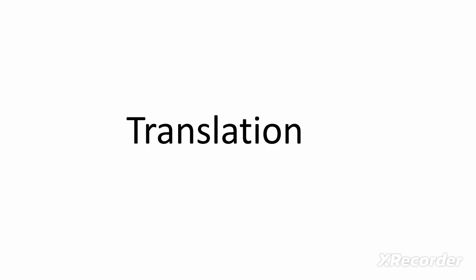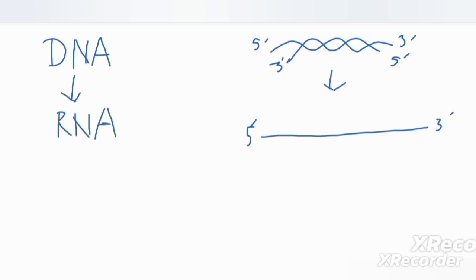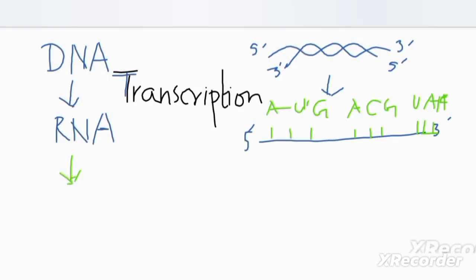Gene expression includes two steps: transcription and translation. Transcription is the first step of gene expression in which RNA is synthesized from DNA using RNA polymerase enzyme. This DNA molecule has two anti-parallel strands, and the information stored in it is transcribed into single-stranded messenger RNA. The information is transferred from nucleotides of DNA into ribonucleotides of RNA. This is known as transcription.